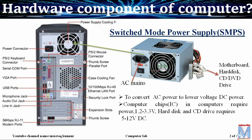The main function of SMPS is to convert from alternating current to DC current, and this DC current varies across different voltage ranges, that is from 1.2 volt to 12 volt DC. In the figure we can see that it takes alternating current and converts it to DC current, which is provided by these different connectors.